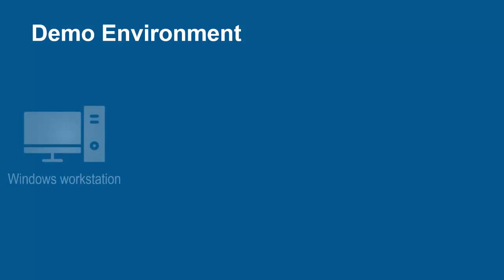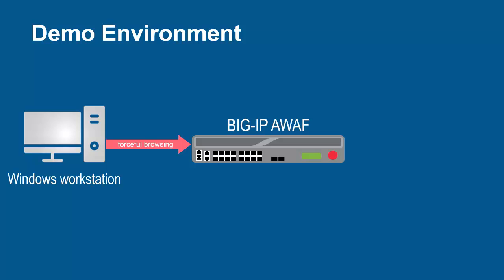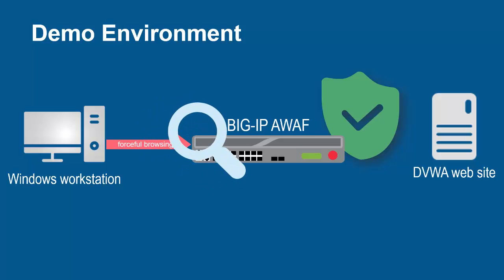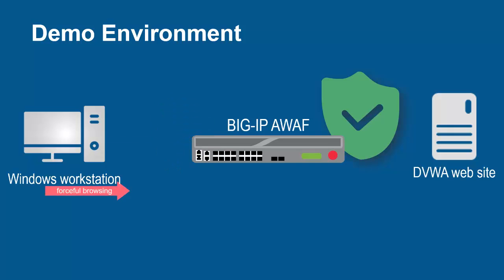The environment for this demo contains three devices. A Windows workstation will be used to make application layer attacks including forceful browsing. These requests will arrive at the F5 BIG-IP System running Advanced WAF. The BIG-IP System sits in front of and protects the backend web application. Using its full-proxy architecture, it examines every request and can block all malicious requests, preventing them from reaching the backend web servers.